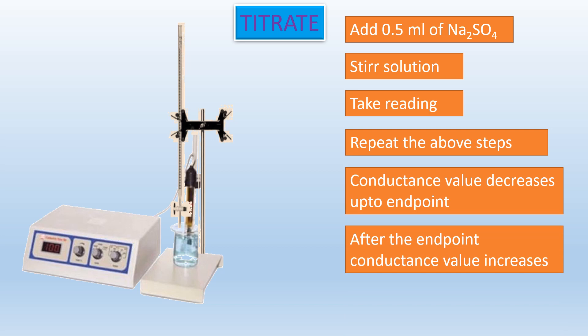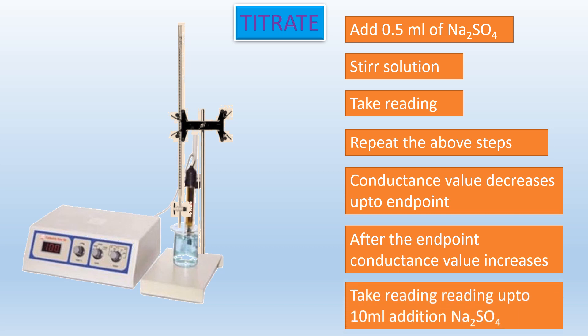After the end point, conductance value increases. Why does it decrease? Because barium sulphate is precipitated out — we are removing ions in the form of precipitate, so conductance decreases. After the end point, there is no further precipitation, so ions are being added to the solution and conductance increases. Take 10 readings up to 10 ml so that we can comfortably draw the graph.